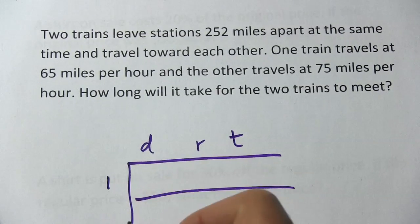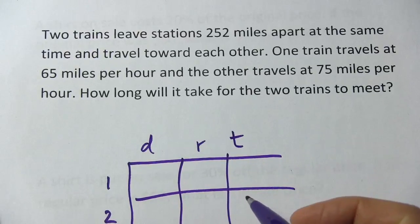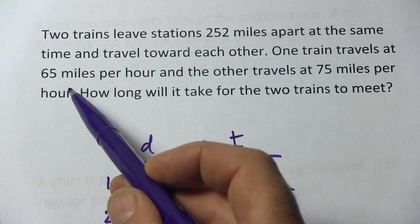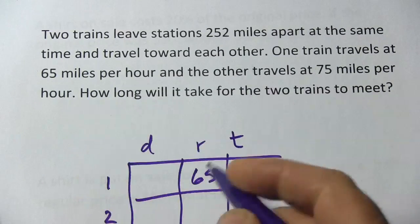We're going to call this train 1 and this train 2. I'm going to start with what we know, what jumps out at me. Train 1 is going 65 miles per hour, so I can fill that in. Train 2 is going 75.